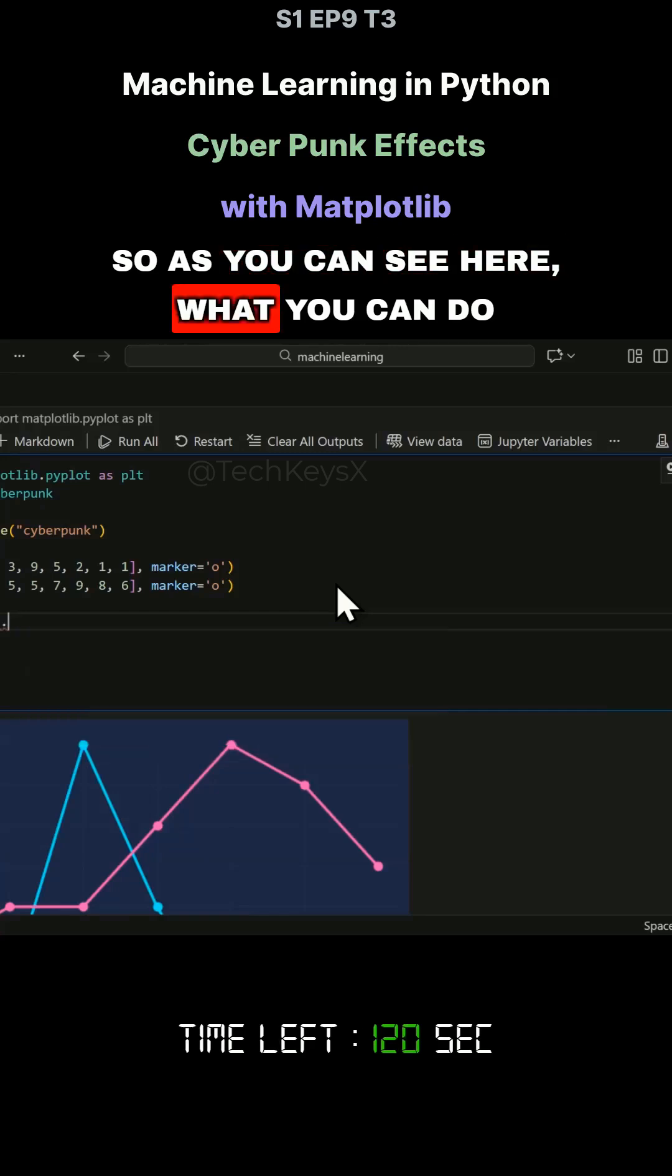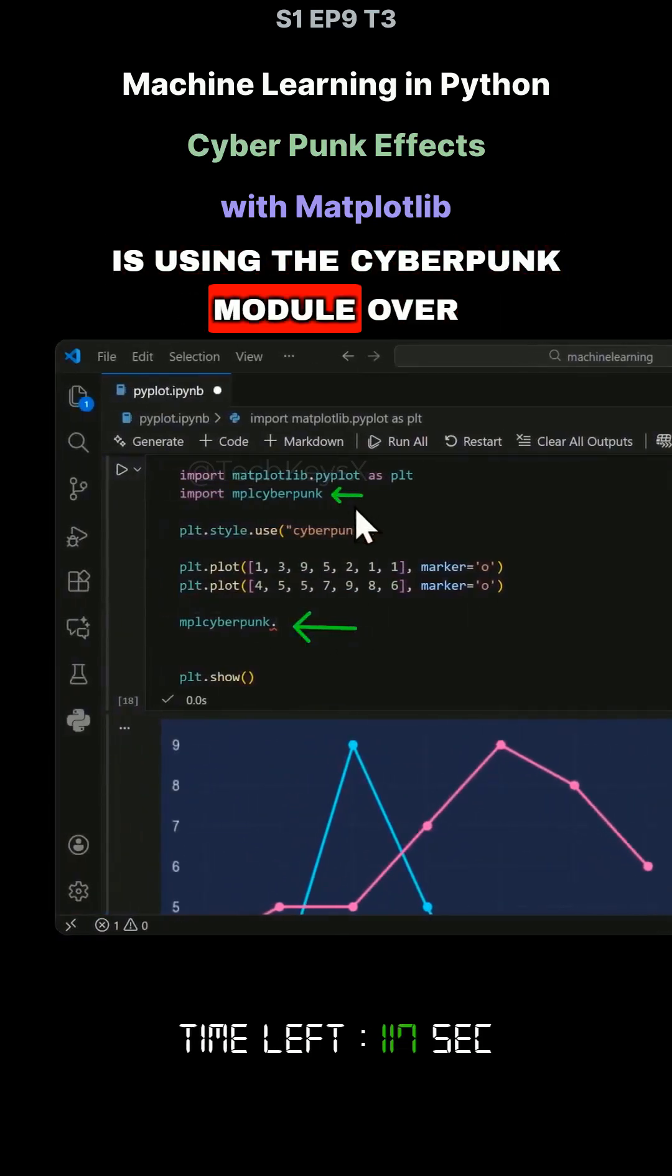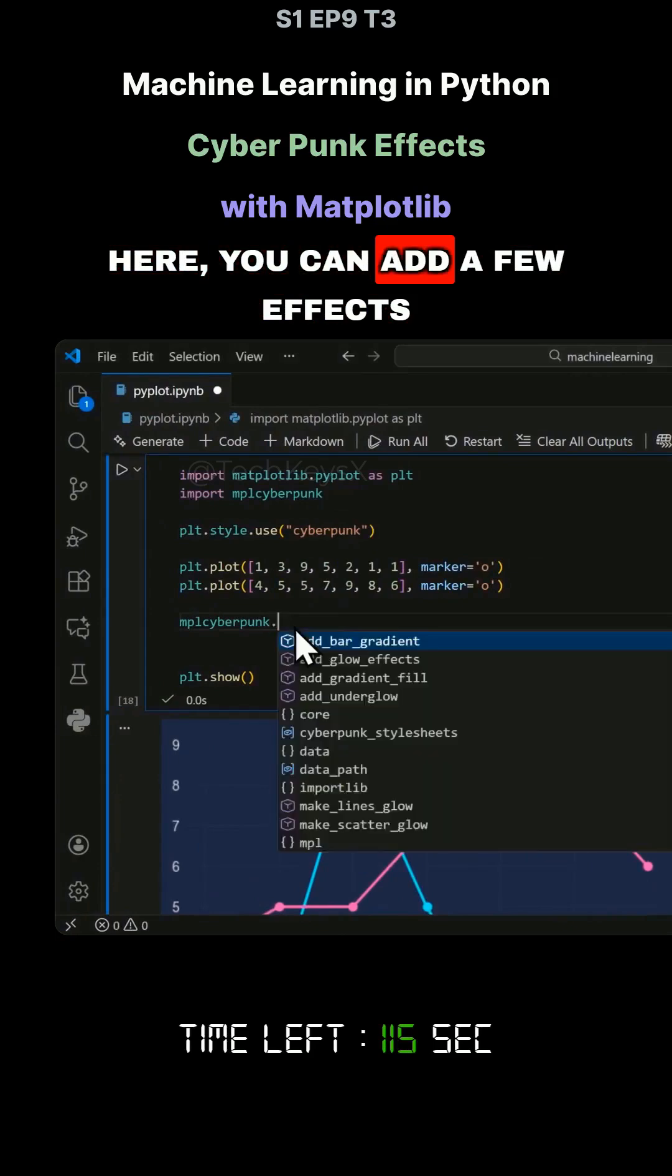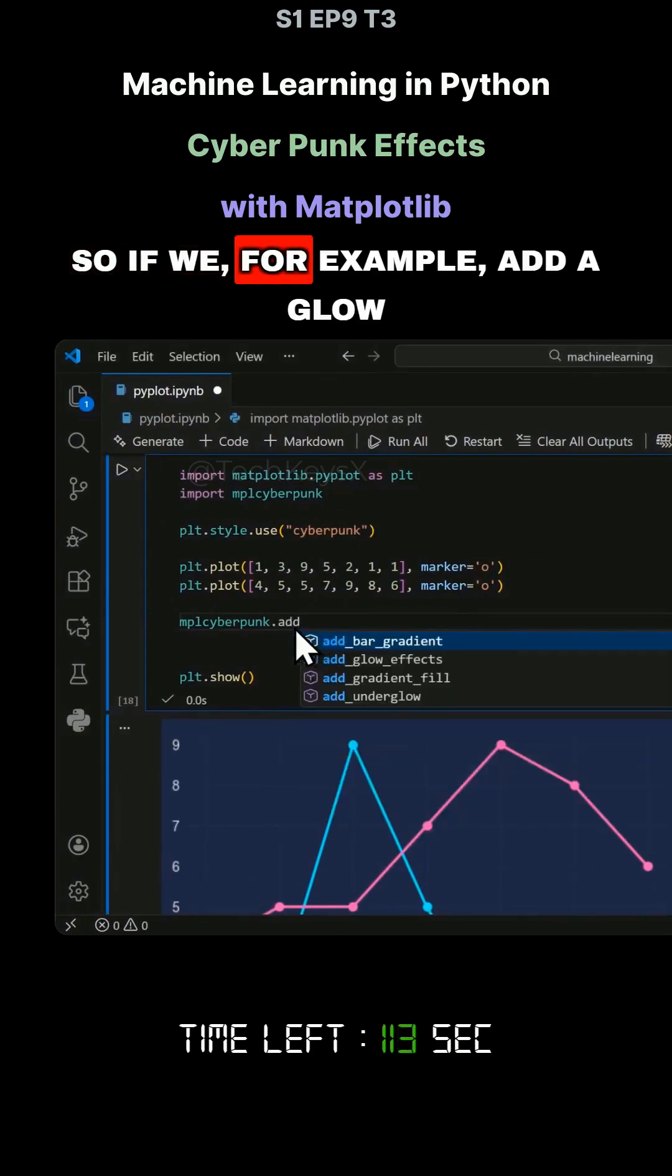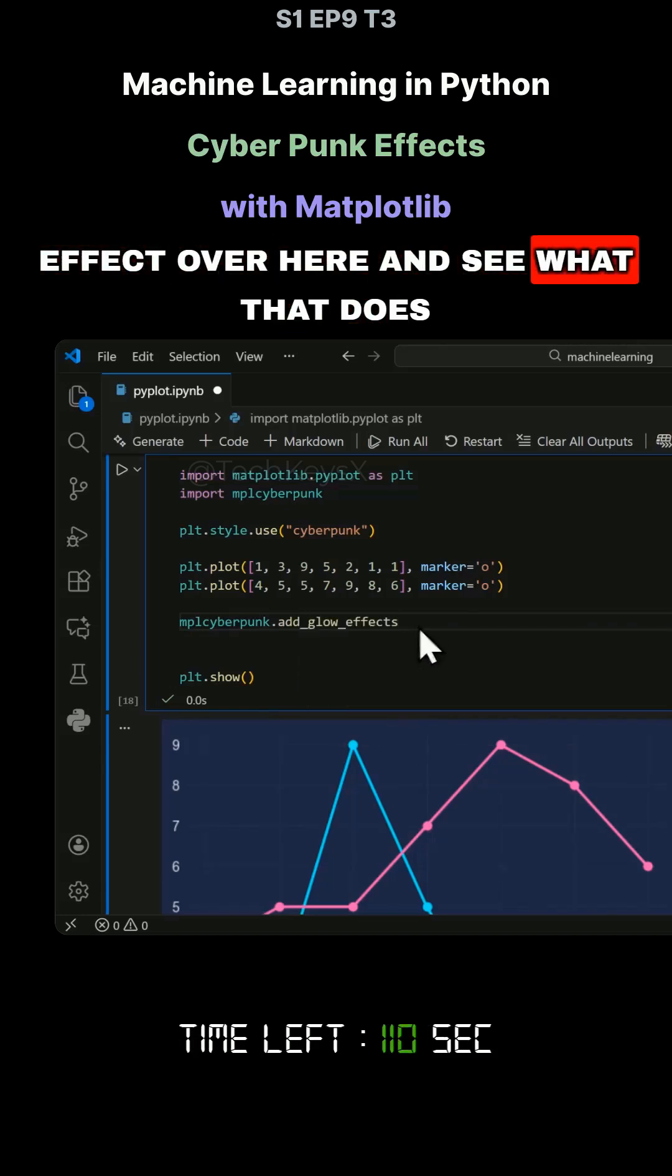So as you can see here, what you can do is using the Cyberpunk module over here, you can add a few effects. So if we, for example, add a glow effect over here and see what that does.